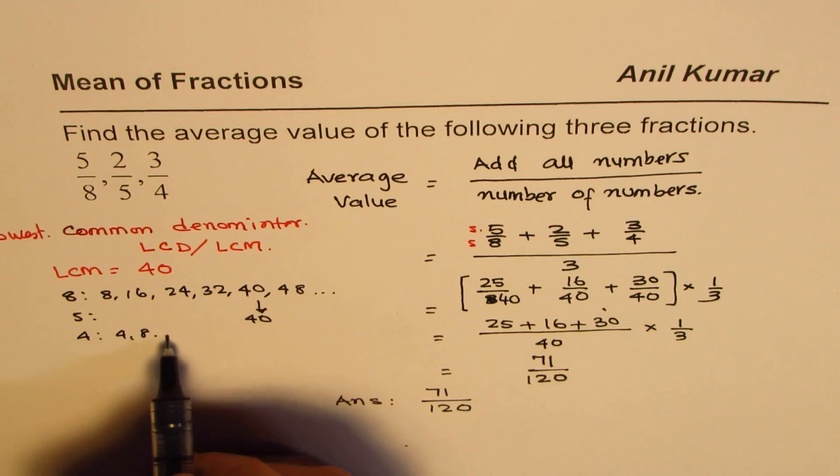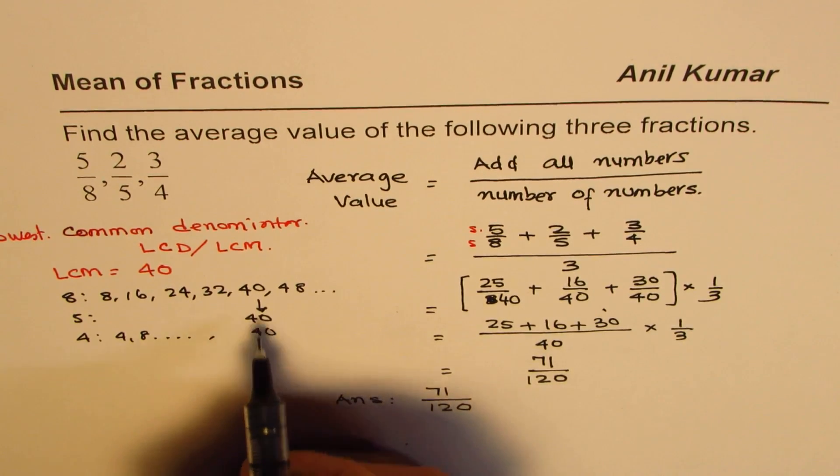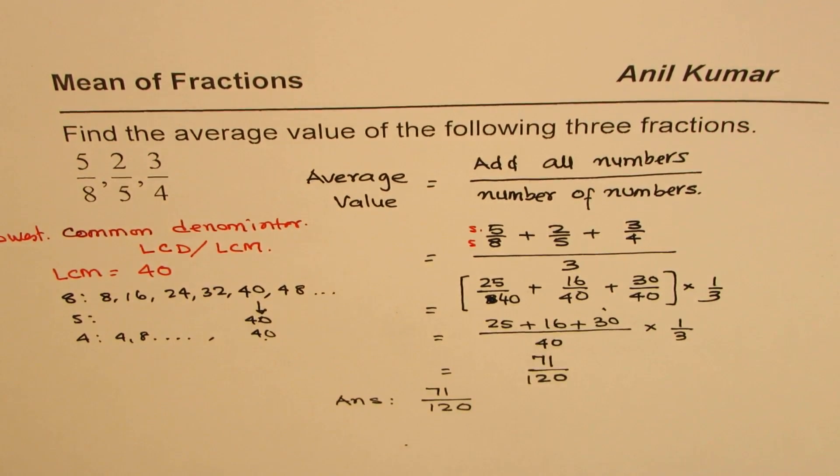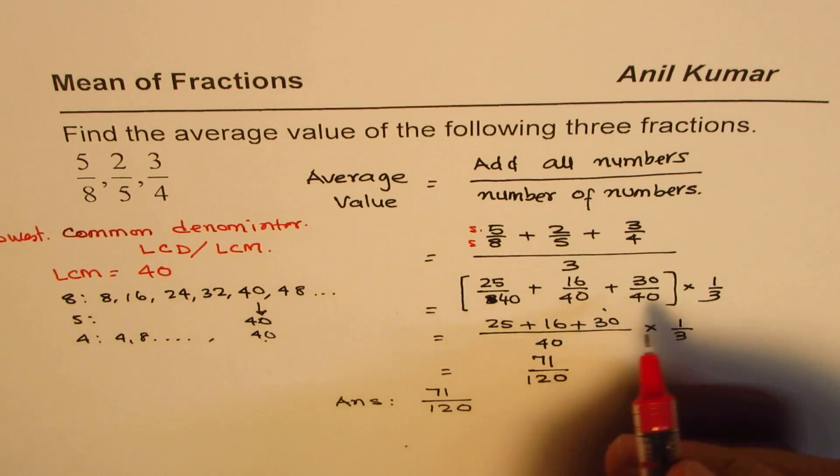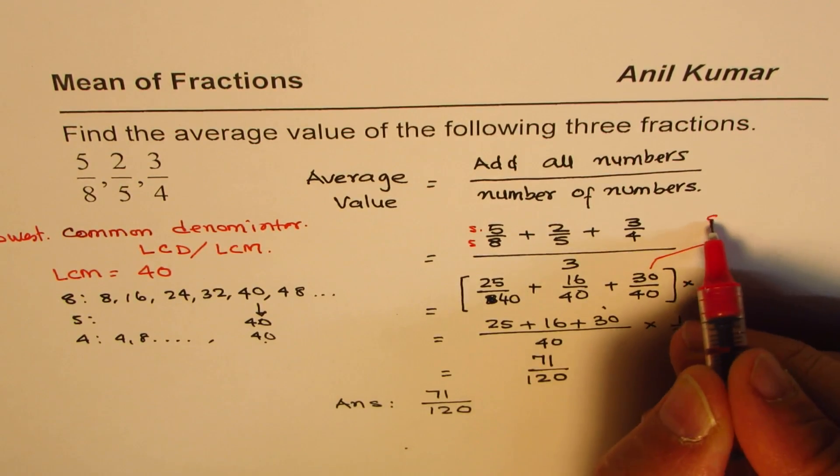Similarly in 4's multiples we have 4, 8 and so on, and we do have 40. So 40 is the lowest common multiple. That was the reason why we made all these denominators equal to 40. So these are equivalent fractions.